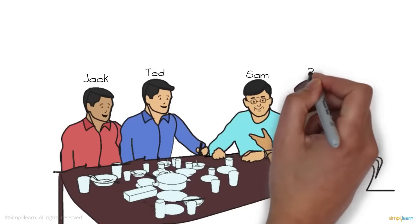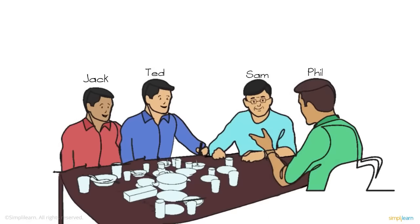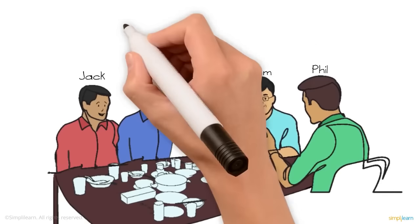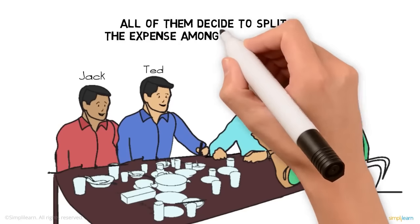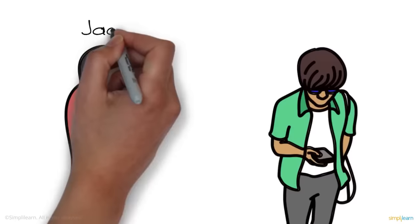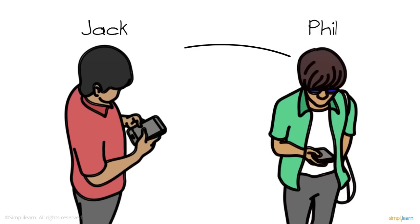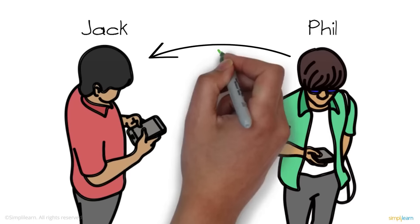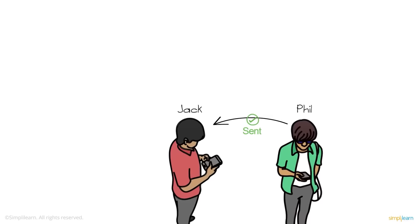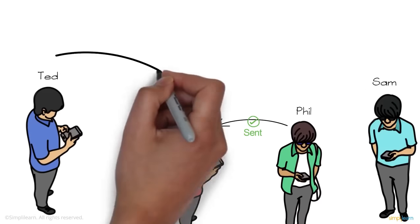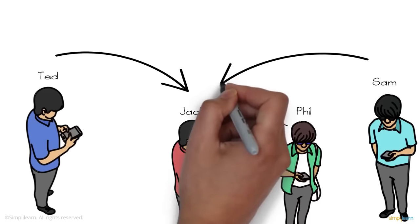Imagine four friends — Jack, Ted, Sam, and Phil — meet up for dinner. After they're done, Jack pays the bill and all of them decide to split the expense amongst each other. On the next day, when Phil sends his share to Jack via online money transfer, the transaction goes through without a hitch.